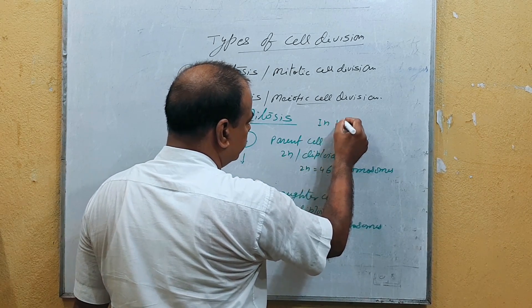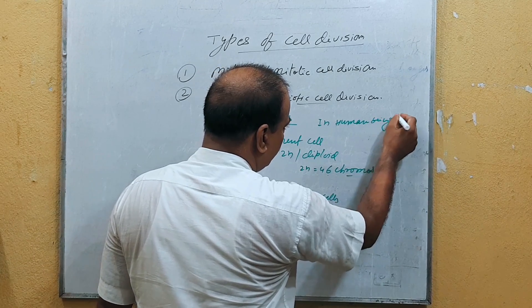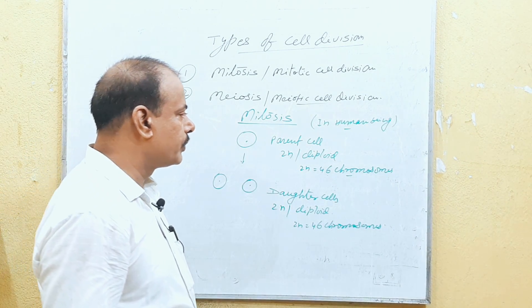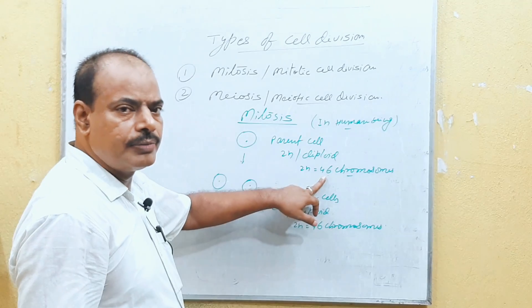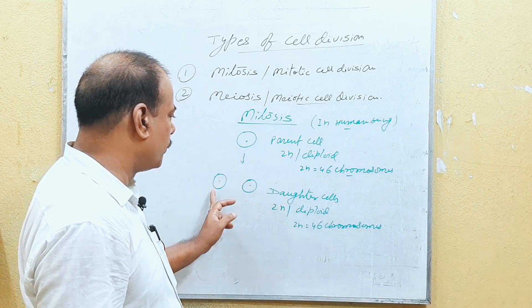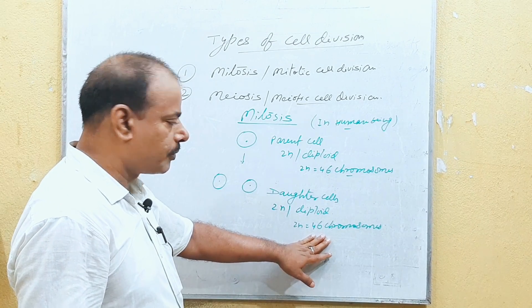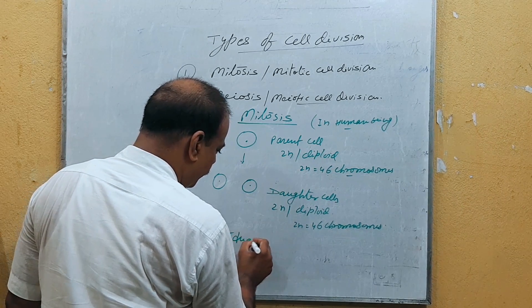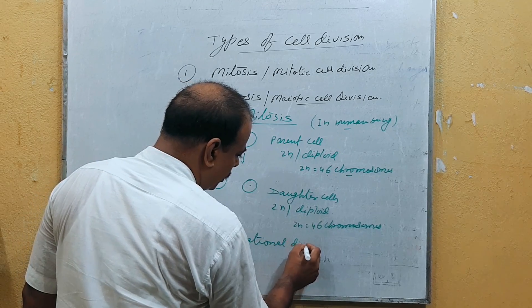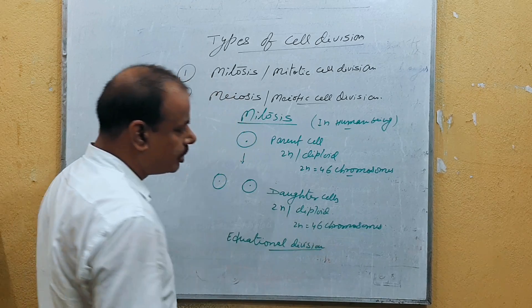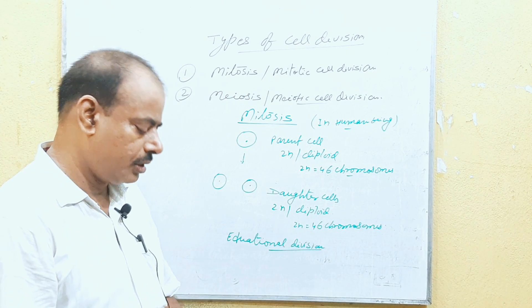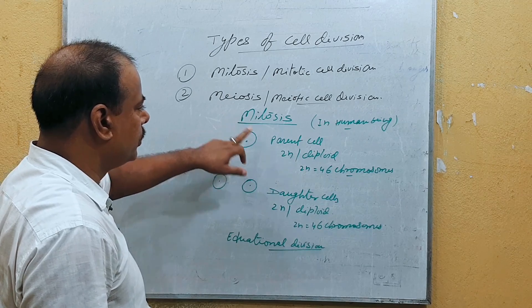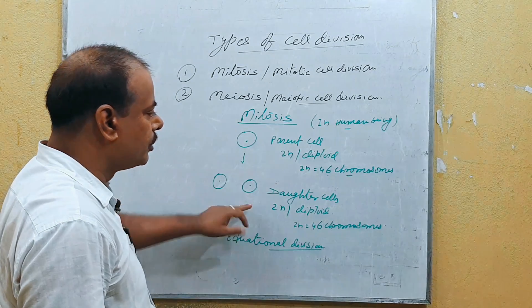In human beings, 46 chromosomes are found in each cell. So the parent cell, which contains 2n meaning 46 chromosomes, divides to form two daughter cells in which the number of chromosomes remains the same. Therefore, it is known as equational division, because the number of chromosomes is similar to that of the parent cell. You can define mitosis as the division in which one parent cell divides to form two daughter cells.